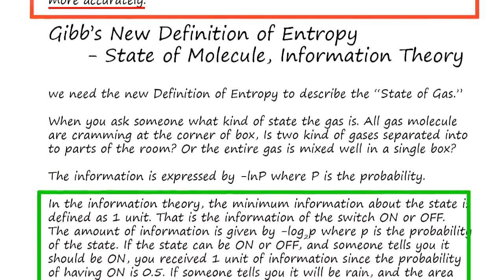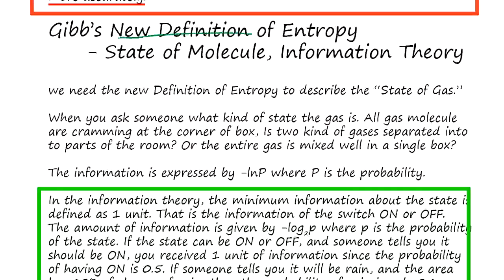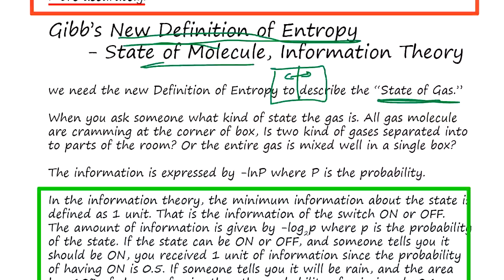So Gibbs proposed this one new definition of entropy. According to Gibbs, the state of gas, where the gas molecules are around - you have two rooms, which side it is - it matters. If you mixed it or separated it, it matters. So he followed the idea of information theory: negative log P, where P is the probability to find the gas.